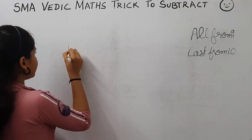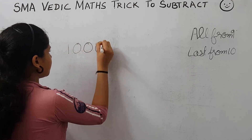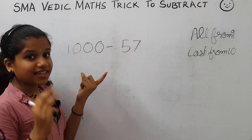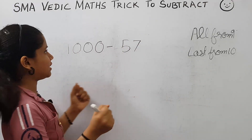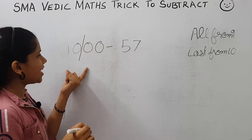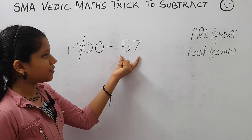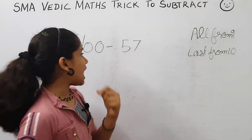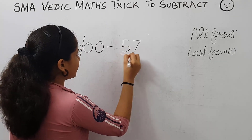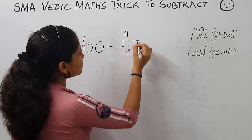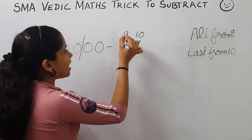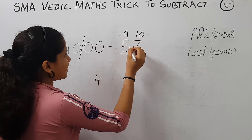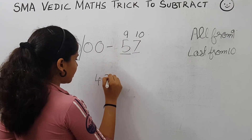Now let's take 10,000 minus 57. Here, there are three zeros but only two digits. So we have to put a slash here to make the number of zeros and digits equal. We can then apply the rule: all from 9 and last from 10. 9 minus 5 is 4, and 10 minus 7 is 3.